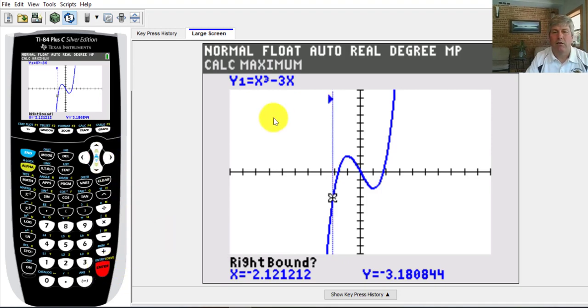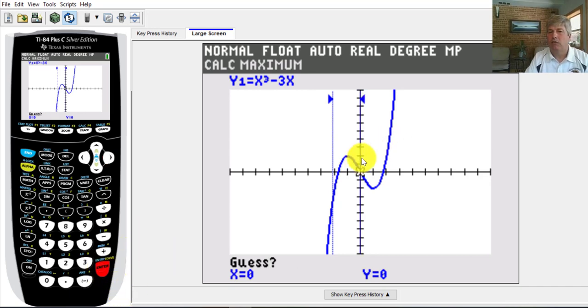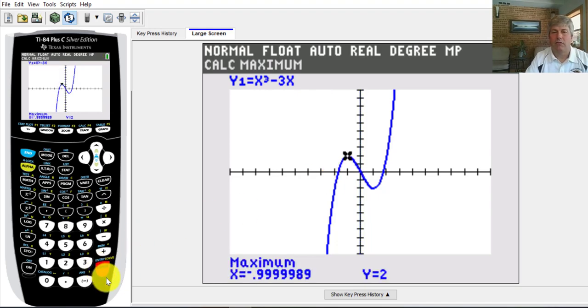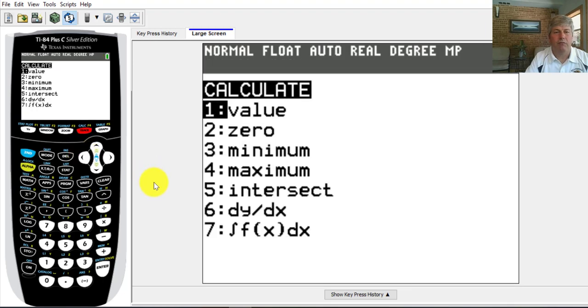So that sounds good. I'm going to hit the left bound. So now I'm going to look everything to the right of that. That's my left boundary. And now it's asking for a right bound. So I need something to the other side of that. So 0 looks pretty good. My right boundary. So I'm looking between 0 and it looks like negative 2 here. I'm not going to enter a guess. I'll just hit enter. And sure enough, it tells me my maximum point is 2 at x equals essentially negative 1. So let's do that again. Let's see if we can find the minimum.